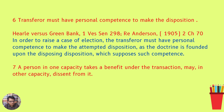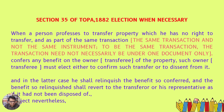Seventh, a person who in one capacity takes a benefit under the transaction may in another capacity dissent from it. Section 35 of the Transfer of Property Act 1882 — Election when necessary: when a person professes to transfer property which he has no right to transfer, and as part of the same transaction confers any benefit on the owner of the property, such owner — namely the transferee — must elect either to confirm such transfer or to dissent from it. In the latter case, he shall relinquish the benefit so conferred, and the benefit so relinquished shall revert to the transferor or his representative as if it had not been disposed of.